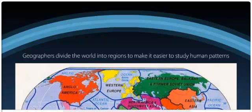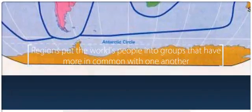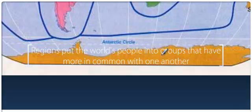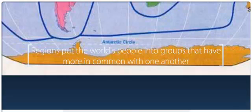Regions are things that geographers use to be able to lump people into categories. Why do they do that? Well, they do it because people do have stuff in common with one another. A cultural region is where a group of people have more in common with one another than they do outside of that cultural region.